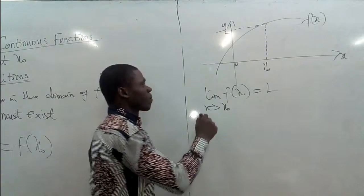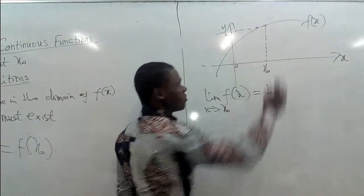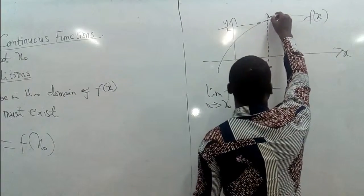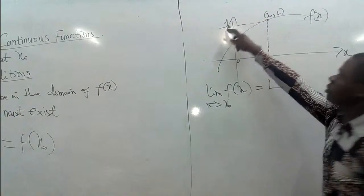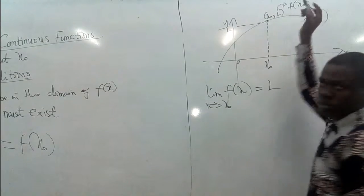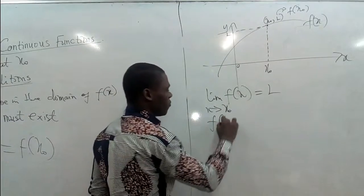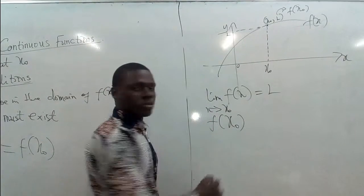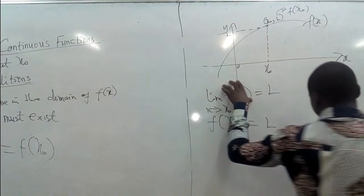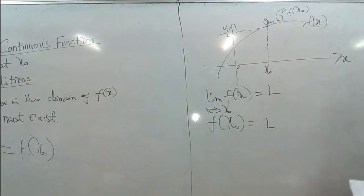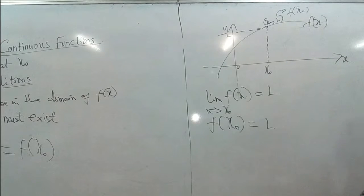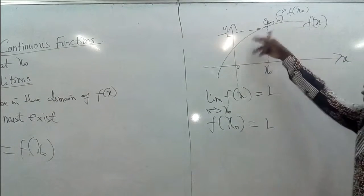At this point, we have a point on the graph written as x naught, and the corresponding value L. This L here will be written as F of x naught. So F at x naught is also equal to L. The third condition has been satisfied: the limit of F of x as x approaches x naught equals L, and the function value F of x naught is also equal to L. So the function is continuous at this point — there is no break.